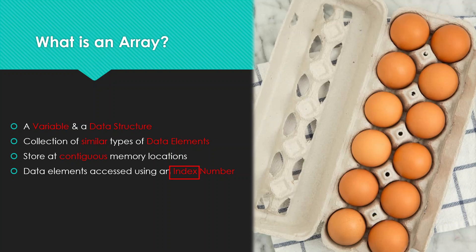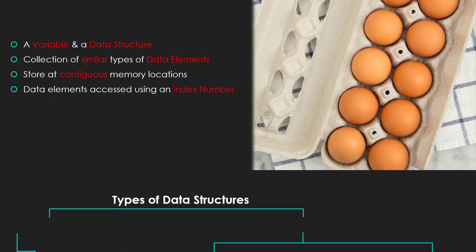Arrays can also be negative-based or positive-based indexed. Negative-based means the index of the first position is a negative number; positive-based means it starts at a number above zero, for example starting at one. The most commonly used in programming is zero-based indexing. So the first element — for example, this particular egg at the top of the array — is at index number zero.